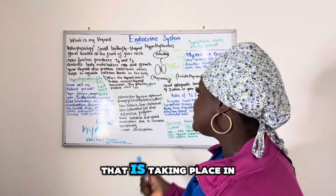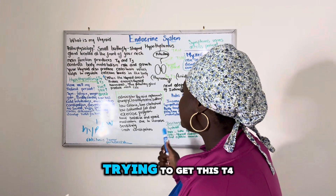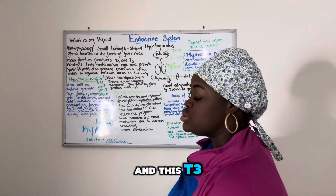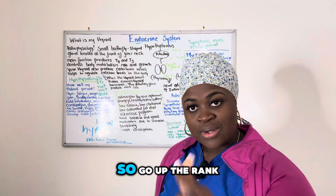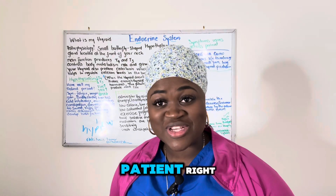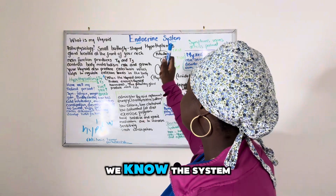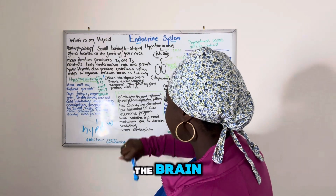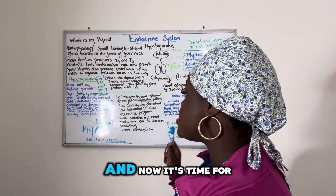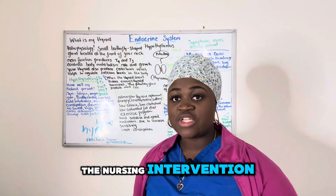It's the same thing taking place in our body — trying to get T4 and T3 to go up. So we've diagnosed our patient, we know the pattern, we know the system, we know it works in the brain, we know about the hormones, we did the blood work, and now it's time for the nursing intervention.